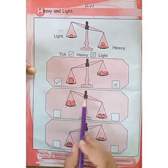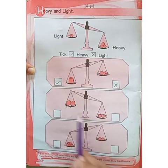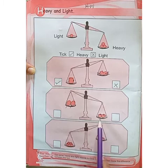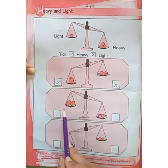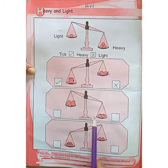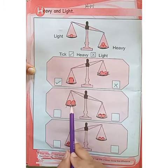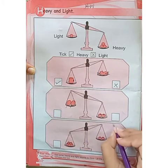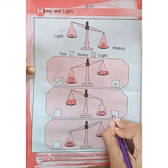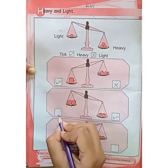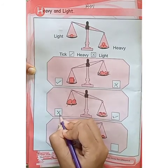Move on to the next one. Look at this example. These are balloons and these are strawberries. This side is light and this side is heavy because balloons are light in weight and strawberries are heavy in weight. So we have to take the heavy side — tick it in the box and cross the light side.